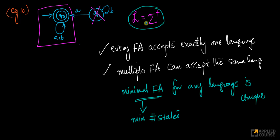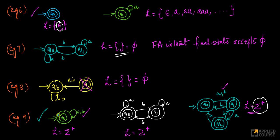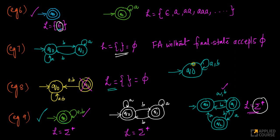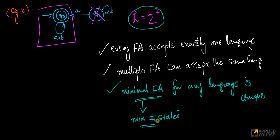For example, if your language is the universal language, the minimal finite automaton has exactly one state. If your language is just the empty string {epsilon}, the minimal automaton also has only one state. If you want a minimal automaton accepting the null set, it has one state with no final states and hence cannot accept any string. The minimal finite automaton — minimal in the sense of minimum number of states — for any language is unique. These are some basic concepts around finite automata and languages accepted by finite automata.